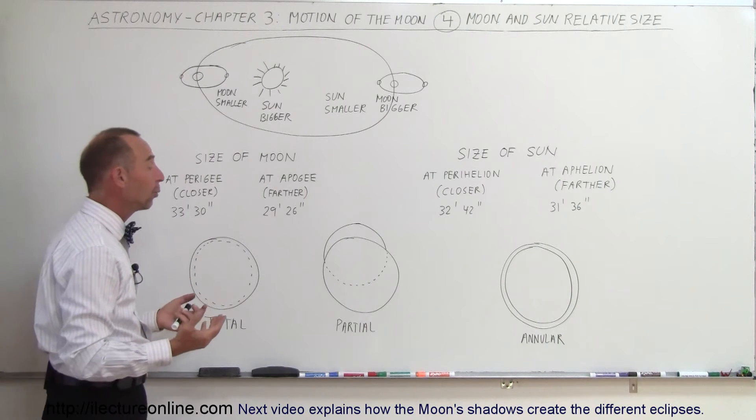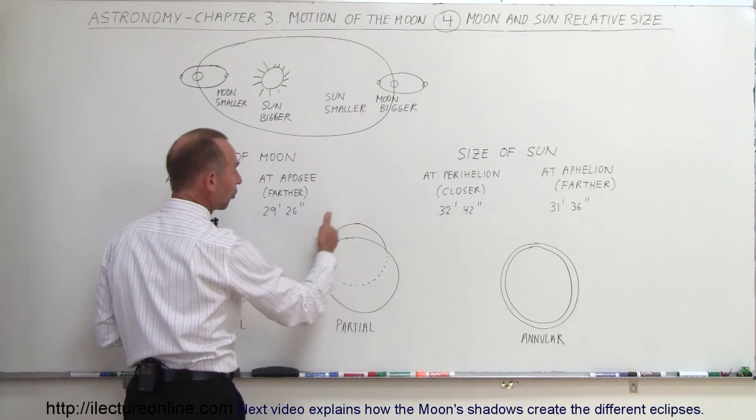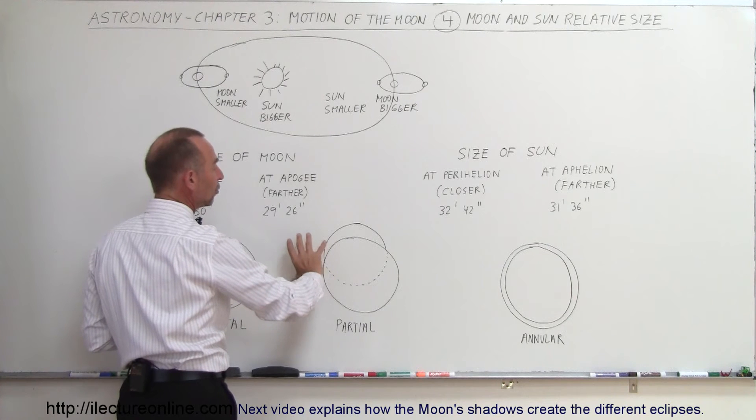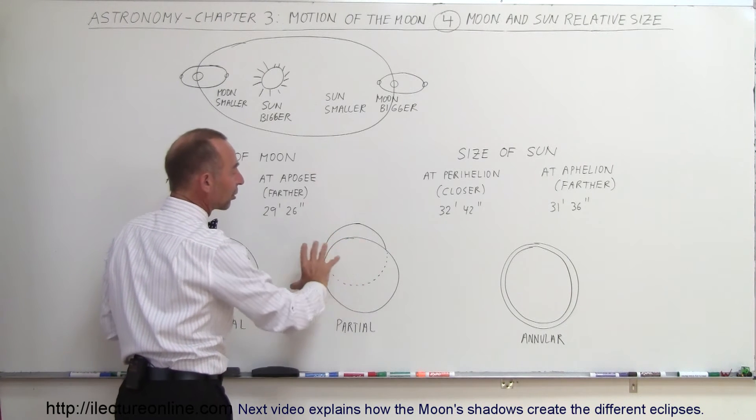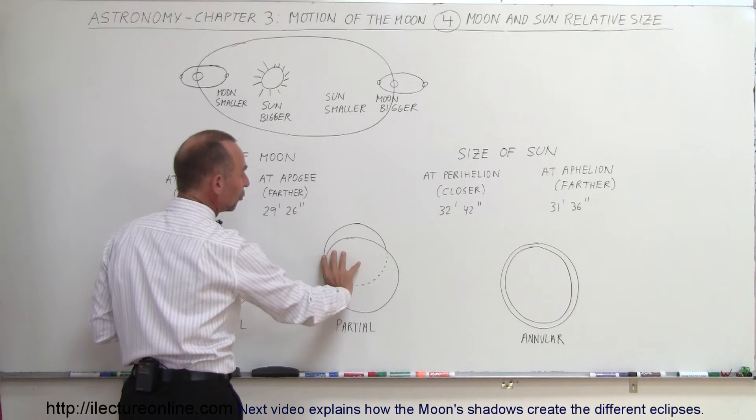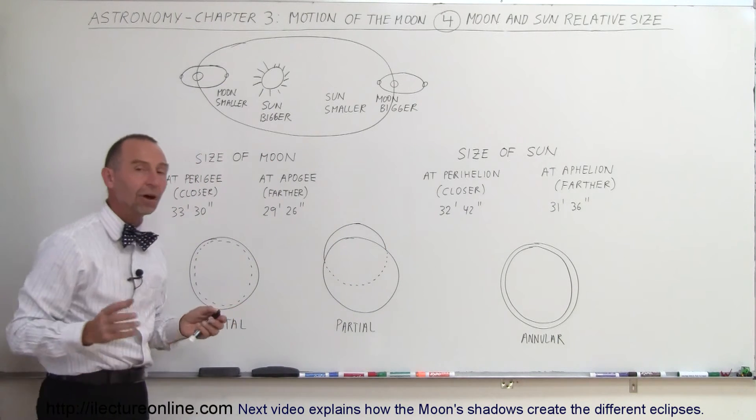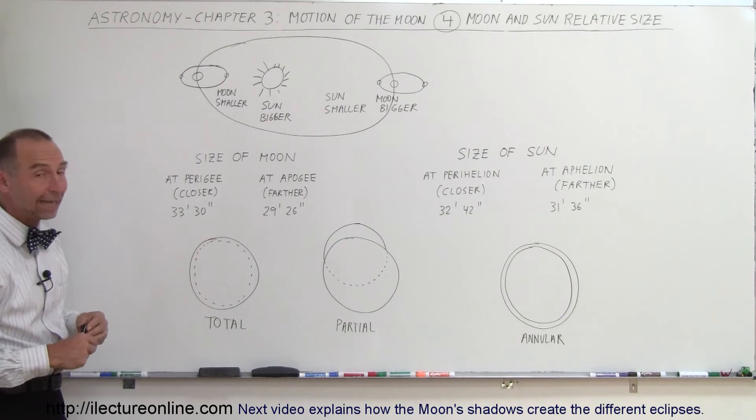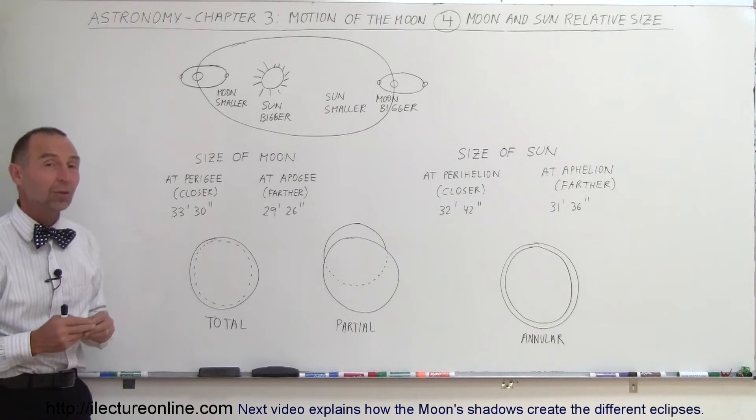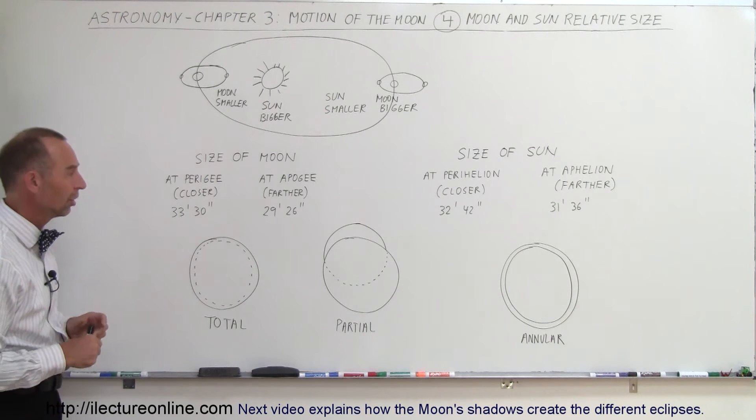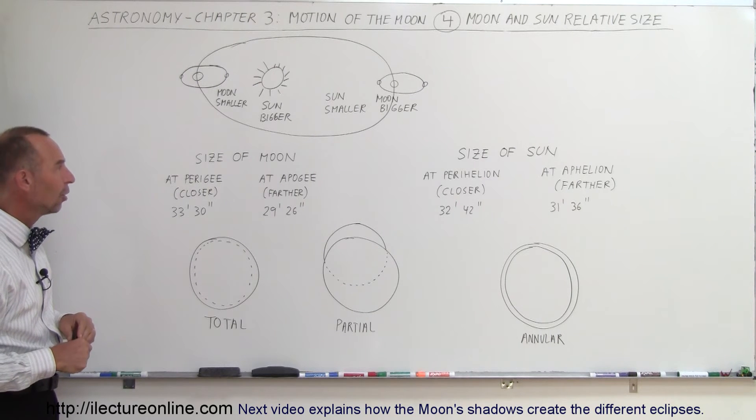Sometimes you have the case where you have a partial solar eclipse where the Moon's disk would be big enough perhaps to cover the Sun's disk, but it doesn't do so at the right location, and so a little piece, a crescent piece of the Sun is still visible. Again, when that happens, do not look at the Sun without special protection, otherwise your eyes can get damaged.